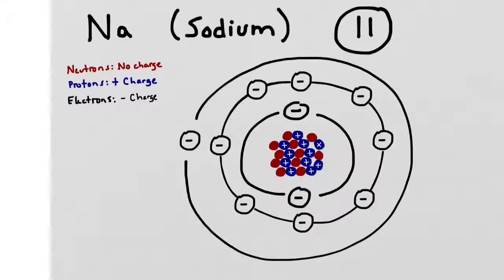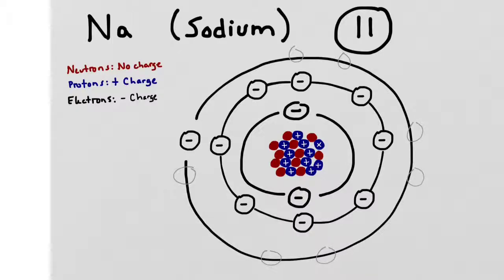Back to our sodium atom — it has one valence electron, but it has seven empty spaces in this shell. It really wants to have eight electrons in its outermost shell. We call this the octet rule.